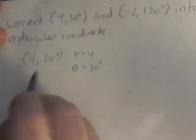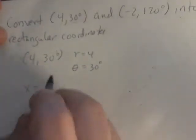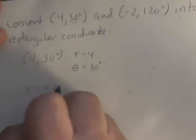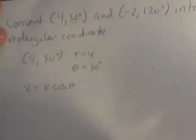We use our two setups for x and y. x equals R times cosine of theta, and y equals R times sine of theta.